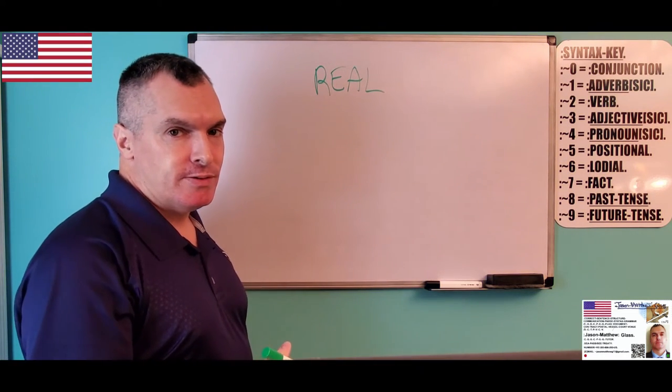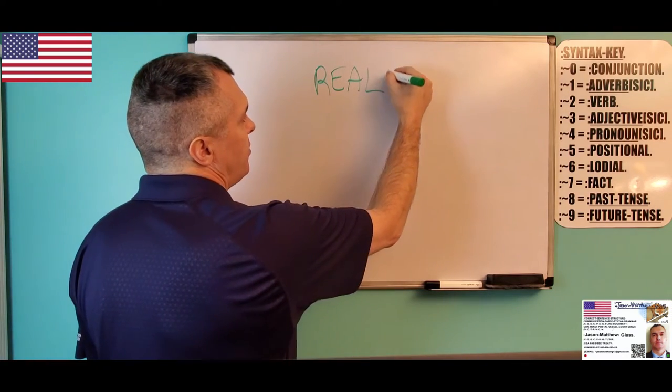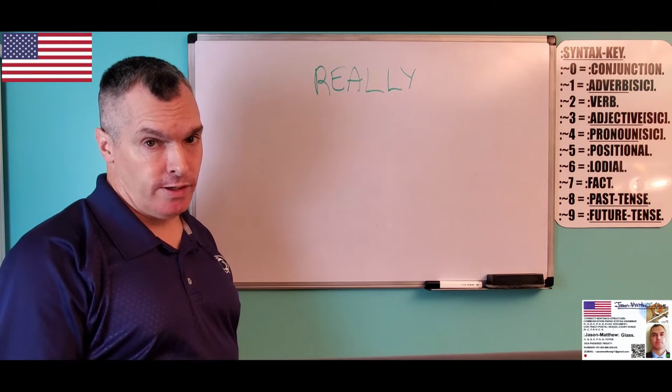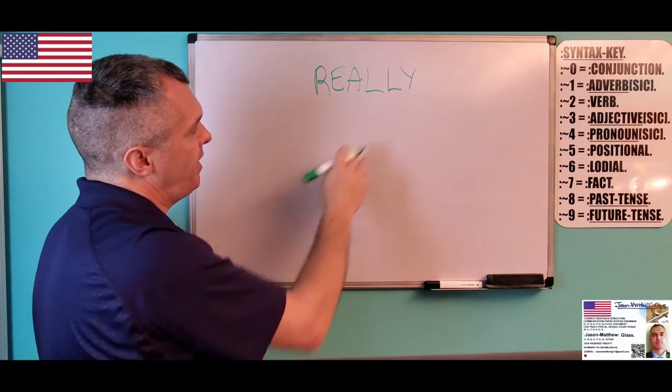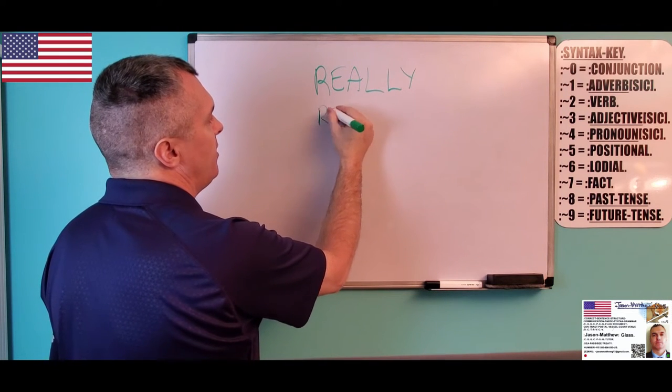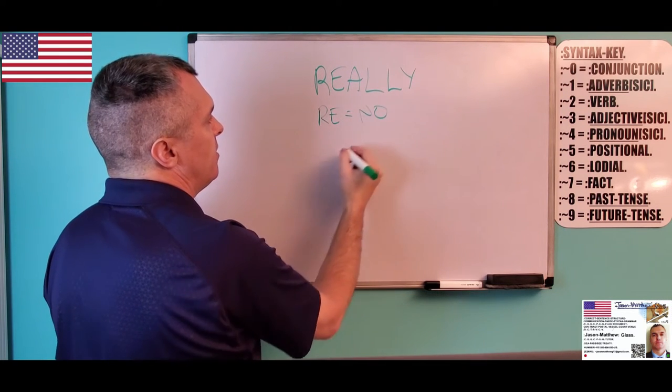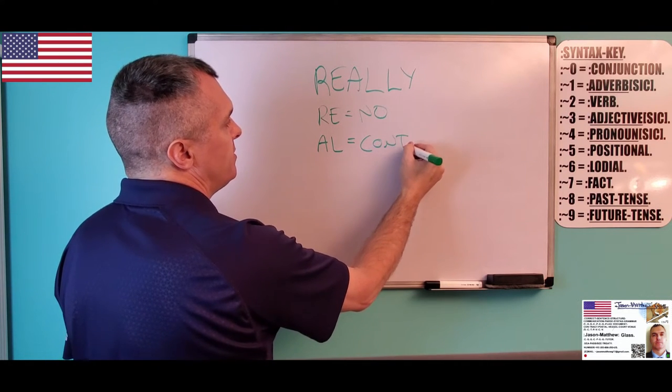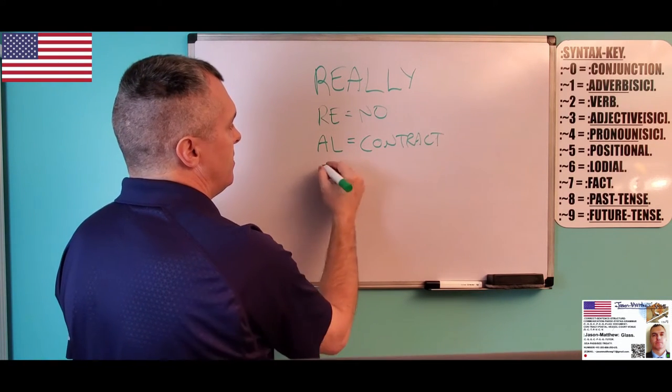What happens if I put this on, really, put the L, Y on, now what happens? So, now when we Parse the word, we have R, E, which means no, A, L, which means contract, L, Y.